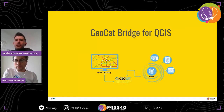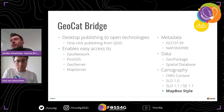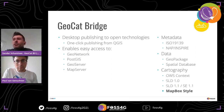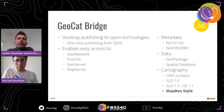GeoCat Bridge for QGIS — what is it? It is a desktop publishing tool, a plugin for QGIS, to help publish metadata and data — so map layers — to various open platforms like GeoNetwork, PostGIS, GeoServer, and MapServer. We support several metadata standards, ISO standards, so you can convert from the QML internal metadata format to the international standards. With data, you can publish to a GeoPackage or to a PostGIS database, at least for GeoServer.